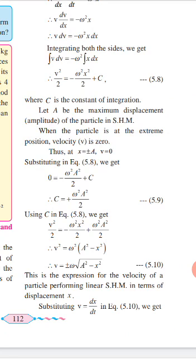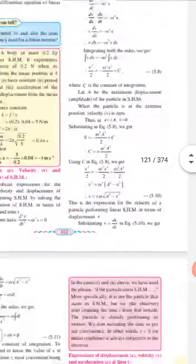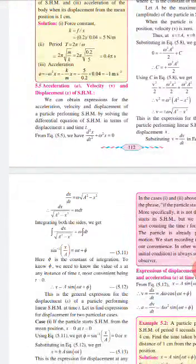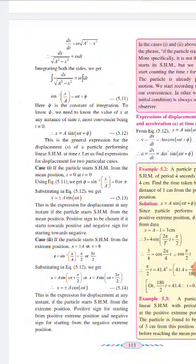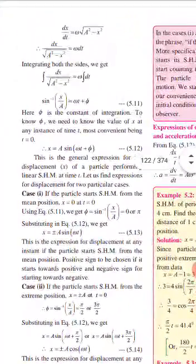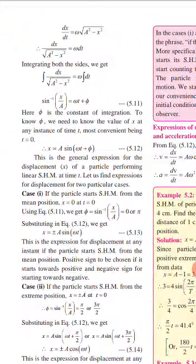This velocity derivation is important — it requires integration and substituting the constant C. Make sure to practice writing it out. Now from V equals dX/dt equals ω√(A² − X²), we separate variables: dX divided by √(A² − X²) equals ω dt. Integrating both sides gives sin⁻¹(X/A) equals ωt plus φ, where φ is the constant of integration. Therefore X equals A sin(ωt + φ), which is the general expression for the displacement of a particle performing linear SHM at time t.